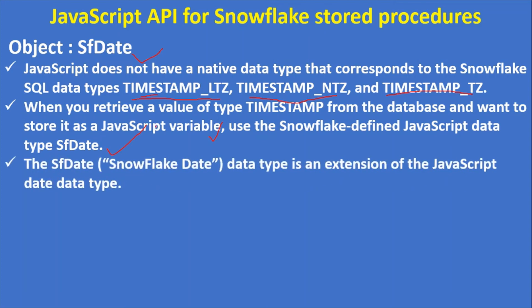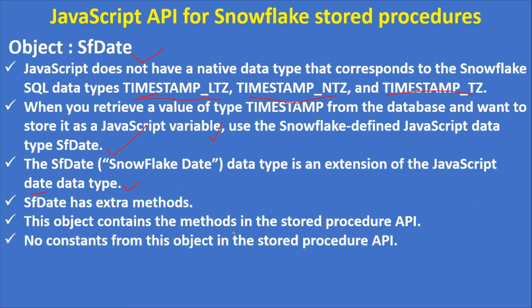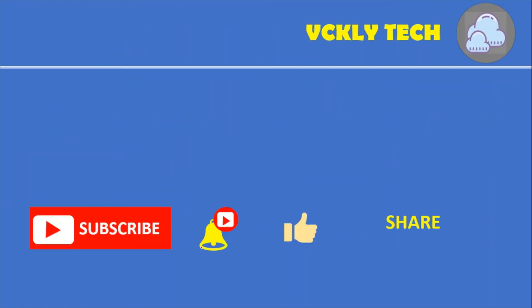The SFDate Snowflake date data type is an extension of the JavaScript date data type. It is not a native JavaScript type but extends it to support Snowflake data types. SFDate has extra methods. This object contains methods in the stored procedure API, and there are no constants from this object.